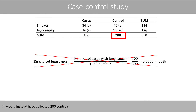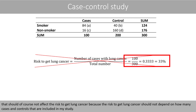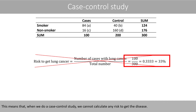If I would instead have collected 200 controls, that should of course not affect the risk to get lung cancer, because the risk to get lung cancer should not depend on how many cases and controls are included in my study. This means that when we do a case-control study, we cannot calculate any risk to get the disease.